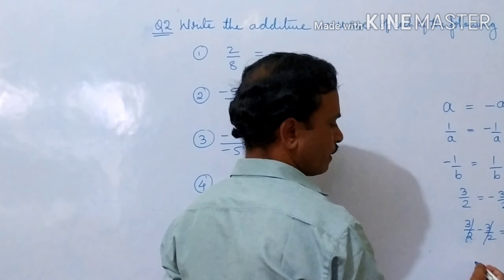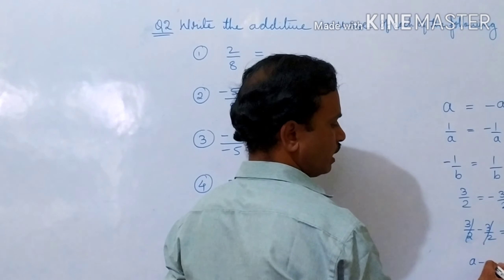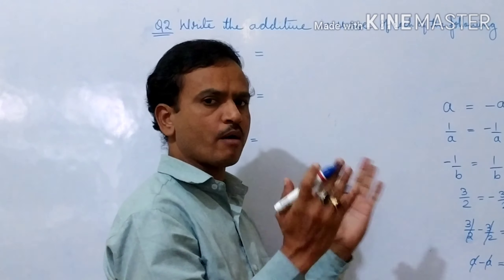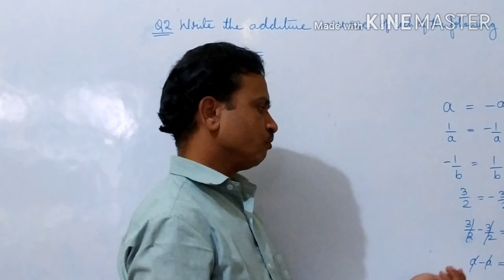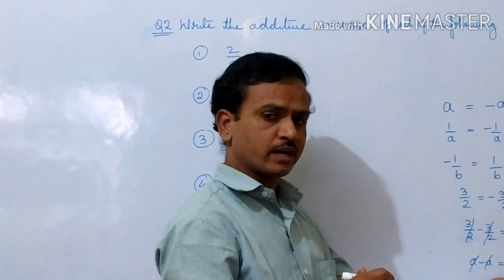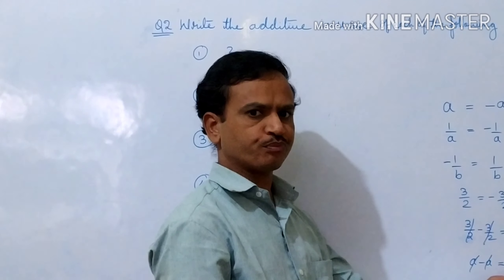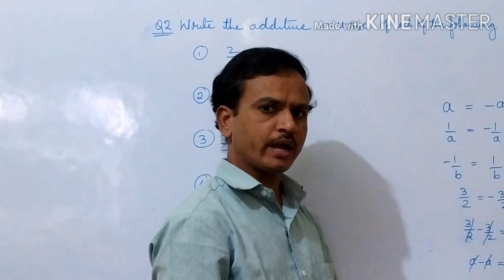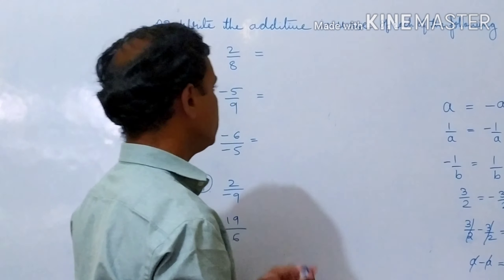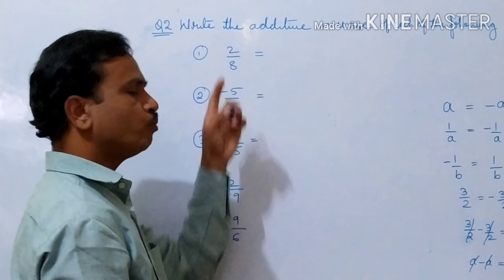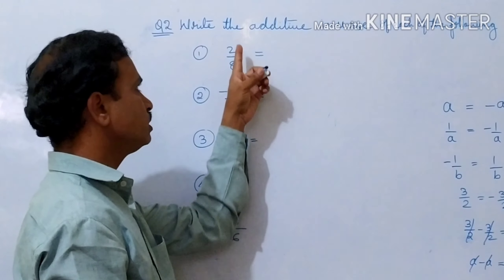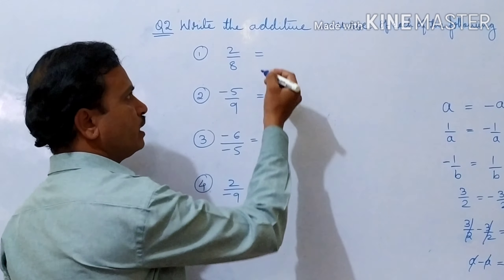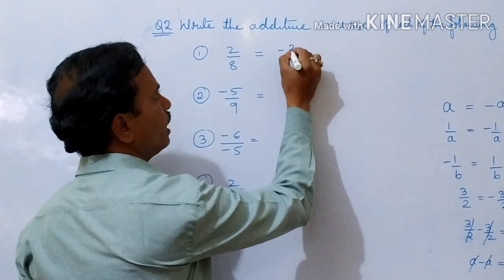Take A minus A — the answer is 0. That means you have to take the opposite number; when you add them you will get 0, because 0 is the identity element for addition. Now here 2 by 8: the additive inverse of 2 by 8 — since 2 by 8 is positive, you write minus 2 by 8.